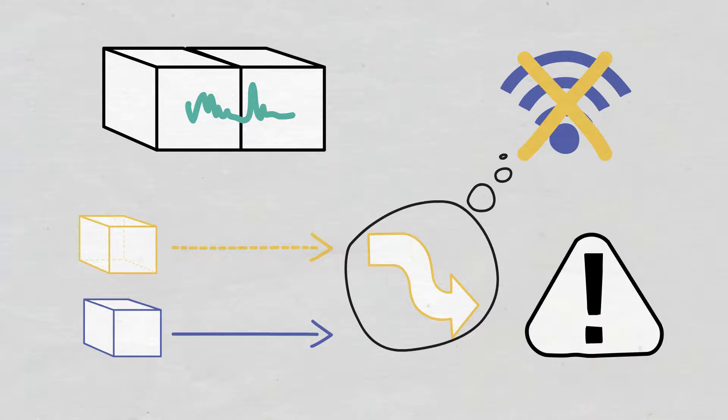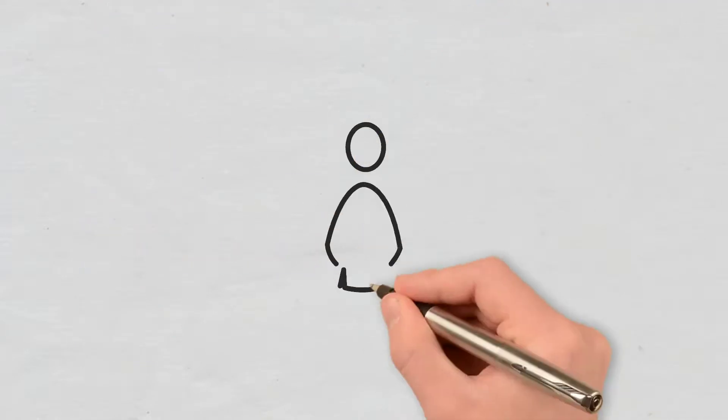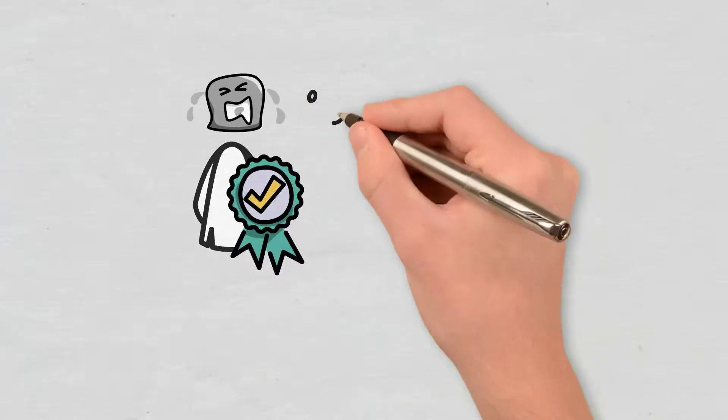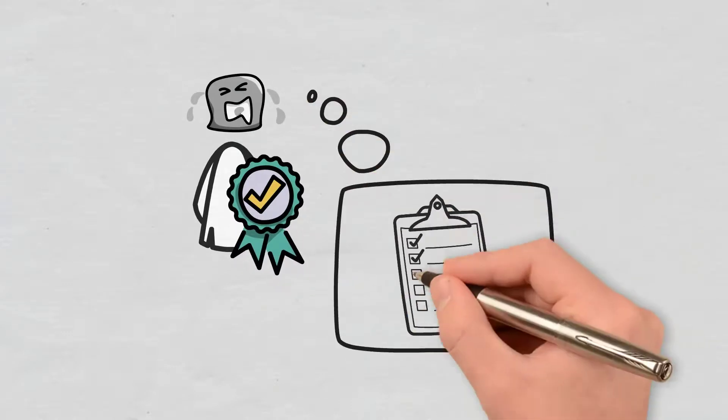However, this is also why double-signing may occur. Many proof-of-stake protocols penalize this validator behavior because it makes it harder for a network to reach consensus.